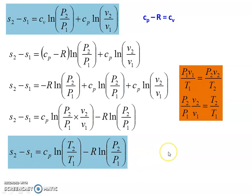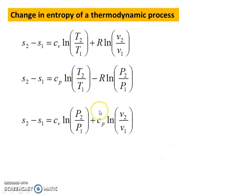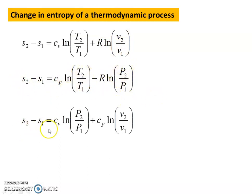Now we have three equations to calculate the change in entropy. First equation: s2 - s1 = Cv ln(T2/T1) + R ln(V2/V1). Second equation: s2 - s1 = Cp ln(T2/T1) - R ln(p2/p1). Third equation: s2 - s1 = Cv ln(p2/p1) + Cp ln(V2/V1). Using any one of these three equations we can calculate the change in entropy.